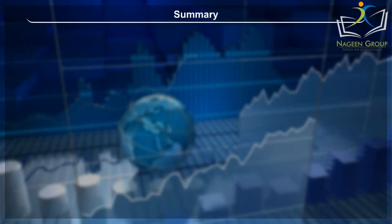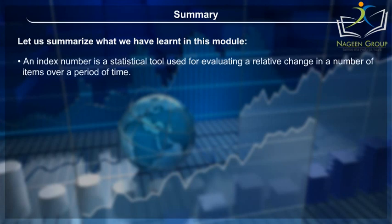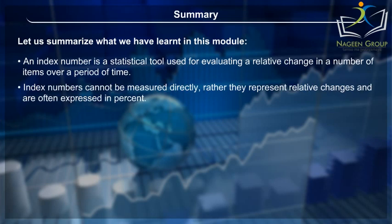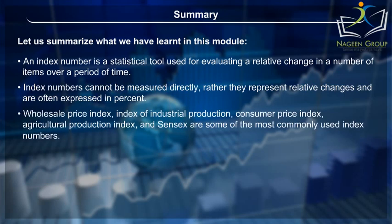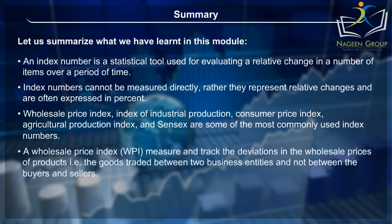Summary: An index number is a statistical tool used for evaluating a relative change in a number of items over a period of time. Index numbers cannot be measured directly; rather, they represent relative changes and are often expressed in percent. The Wholesale Price Index, Index of Industrial Production, Consumer Price Index, Agricultural Production Index, and Sensex are some of the most commonly used index numbers.